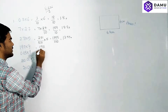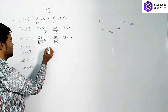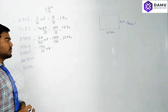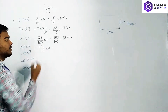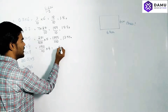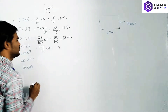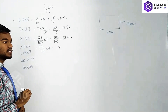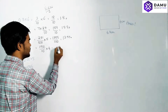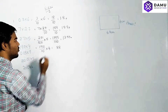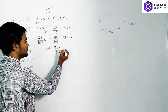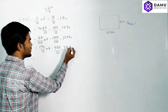Next: 19.7 into 4. That becomes 197 by 10 into 4. Multiplying 4 into 197: 4 sevens are 28, 4 nines are 36 plus 2 is 38, 4 ones are 4 plus 3 is 7. So 788 by 10, which equals 78.8.